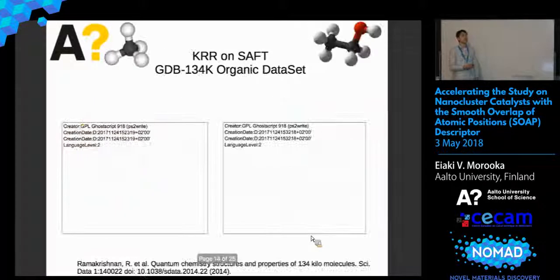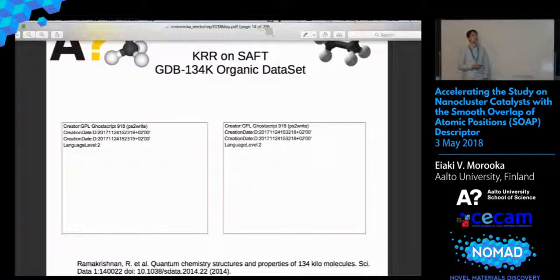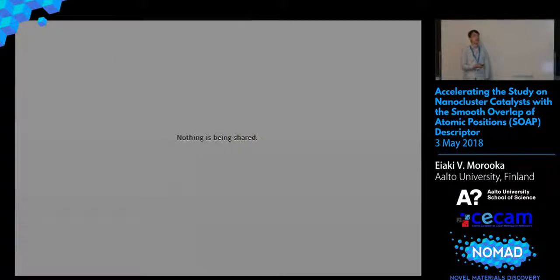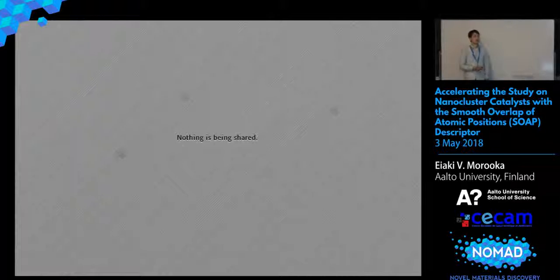We tried this on the QM9 134K organic dataset, which actually learned pretty well, but not as good as the state-of-the-art descriptors. The problem is that it's really heavy computationally — for example, we have to integrate over basically this full expression — so it's much harder to differentiate. We gave up and put this project aside.